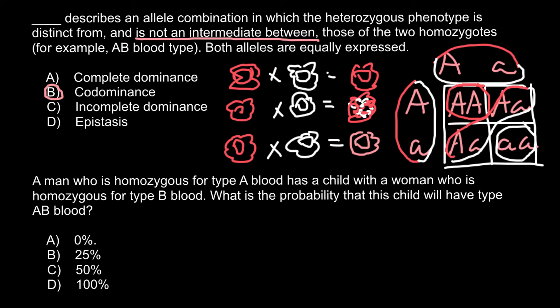The second question: a man who is homozygous for type A blood has a child with a woman who is homozygous for type B. What is the probability that the child will have type AB blood? The ABO blood group system has three alleles: A, B, and O, which can form several genotype combinations.